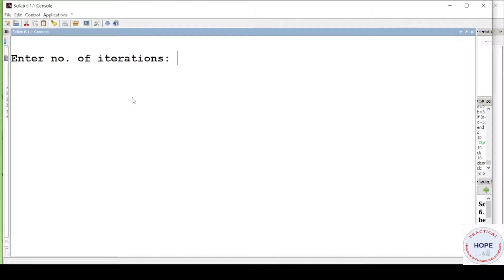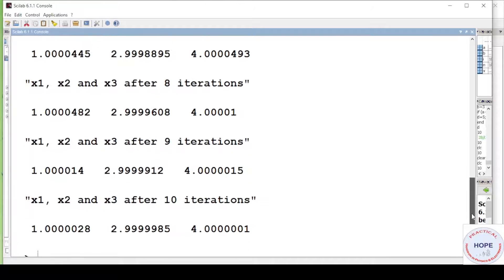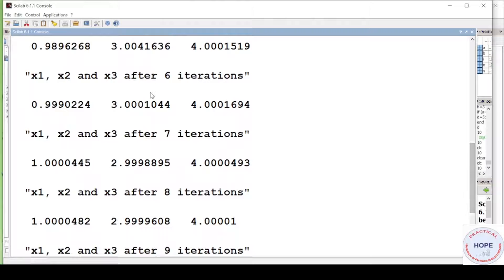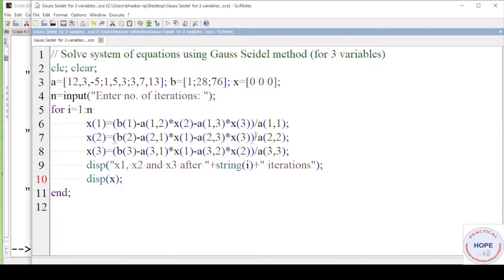It is asking for the number of iterations. Say we write 10 iterations. So these are the final solutions. x1 is 1, x2 almost 3 and x3 is 4. But there is one thing that you can notice from here is that this final solution we have got after 6 or you can say 7 iterations and unnecessarily the program has been executed till 10 iterations. So we need to check if the difference between the present values of x1 or x2 or x3 is almost the same as the previous value of x1, x2 or x3. Then we need to stop the iterations.